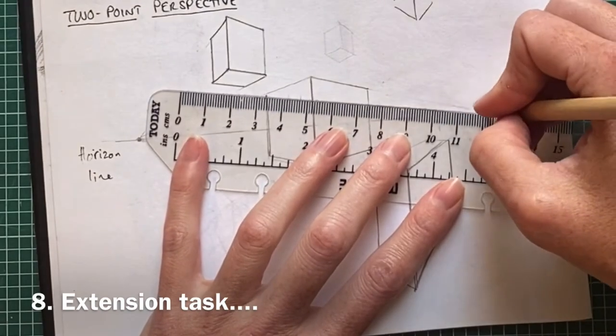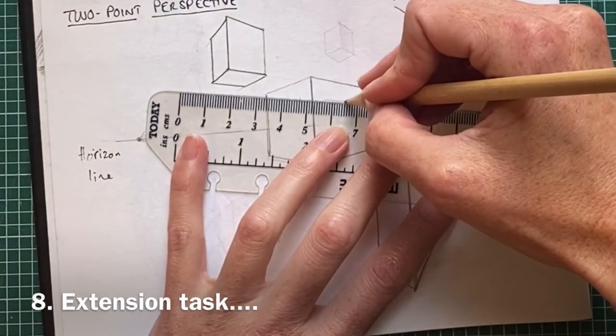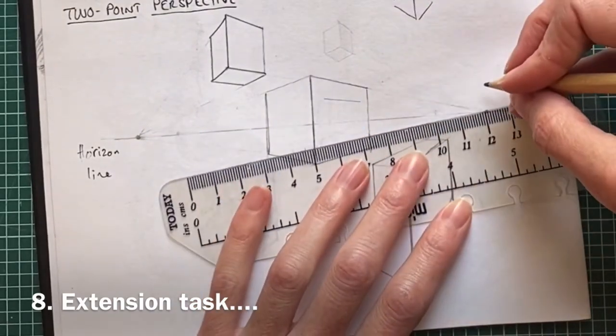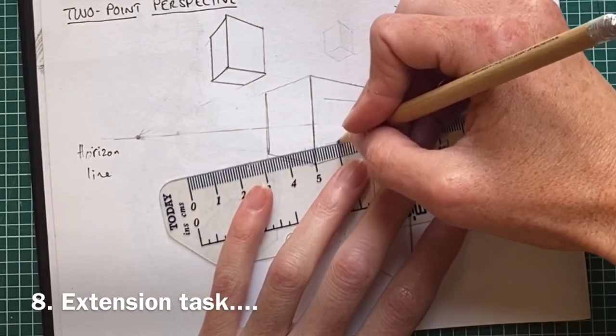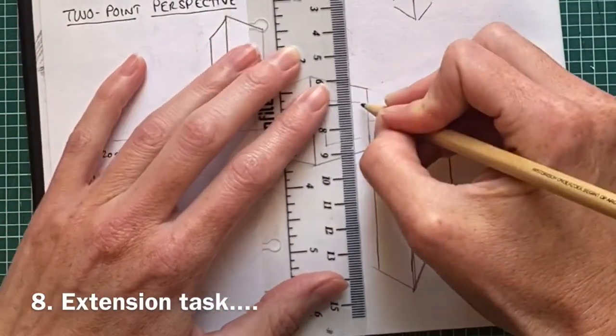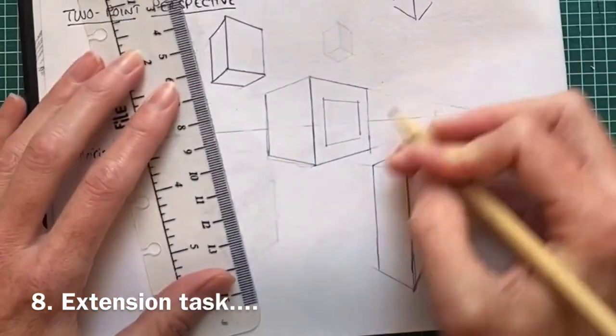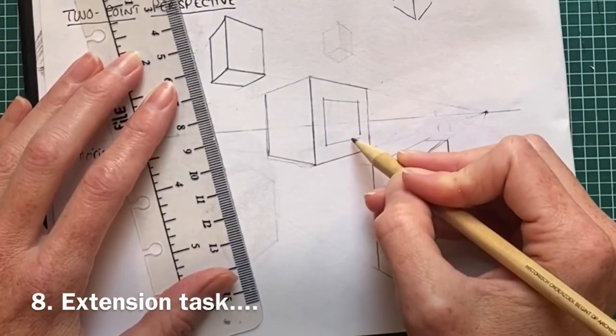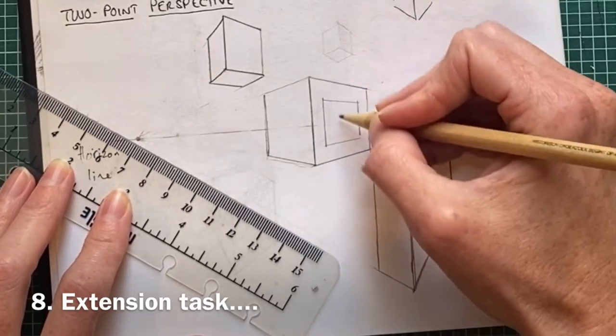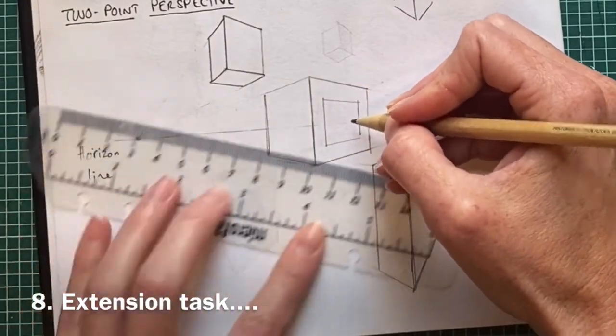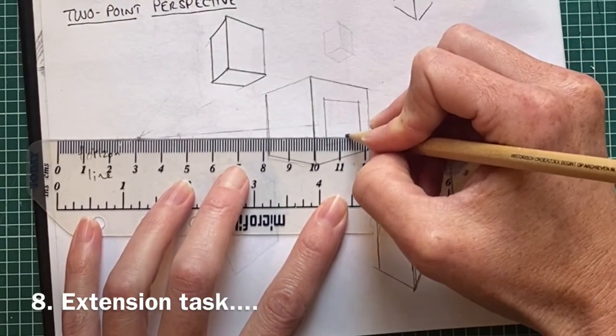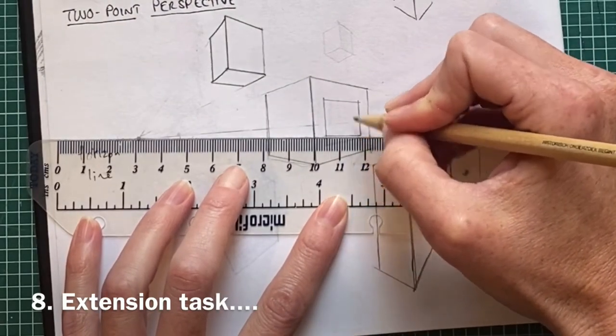I'll go there with a vertical line. So already I've got a box within a box. If I wanted to make it look more three-dimensional or like a space within, how could I do that? I could just join that up there.